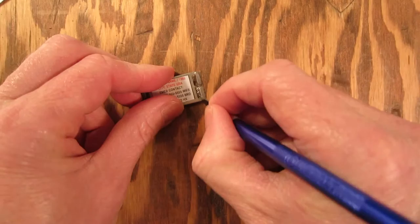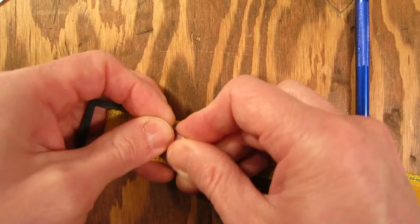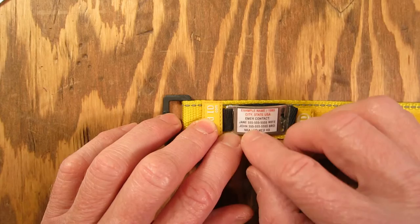And pop that right back on there. Great thing about this now is I can change it whenever I want. If anybody else's phone number changes, if my address changes, if I want to change anything on here, if I become allergic to something, I can put it on there. I just print another one, peel this one off, put the new one back on, and I'm ready to go.